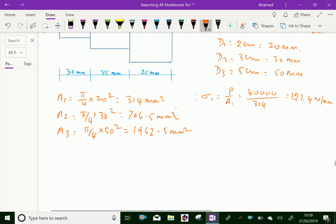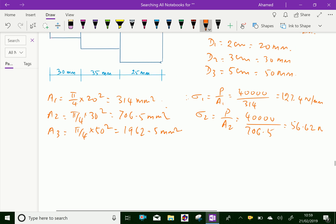Then stress in section 2, P by A2, 40,000 over 706.5. 40,000 divided by 706.5 equals 56.62 Newton per mm square.